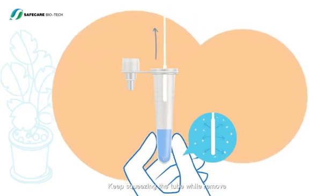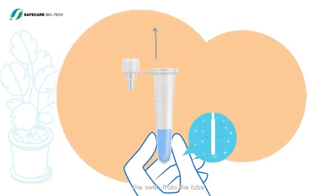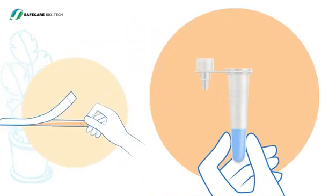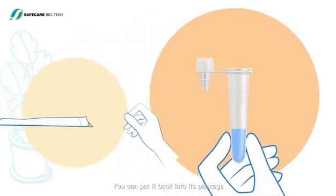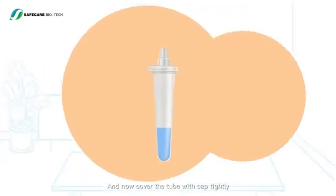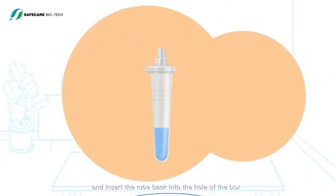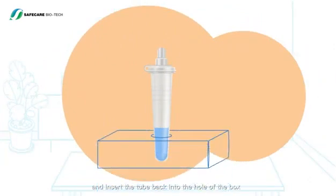Keep squeezing the tube while removing the swab from the tube. Dispose the swab. You can put it back into its package. Now cover the tube with cap tightly and insert the tube back into the hole of the box.